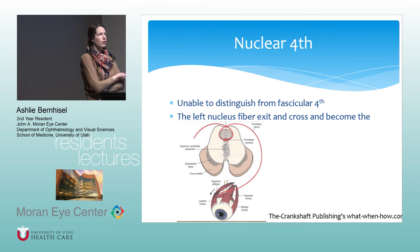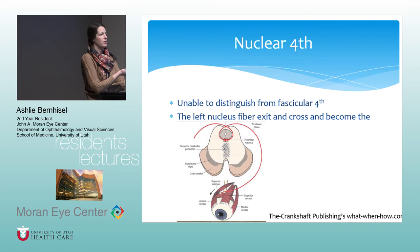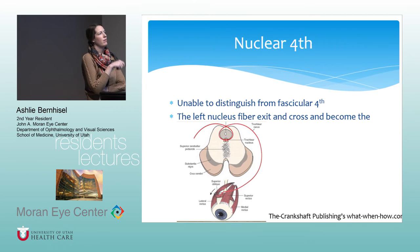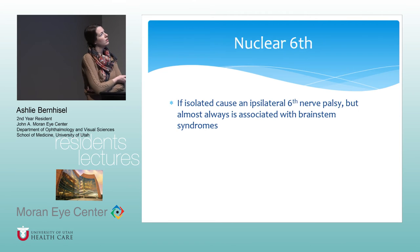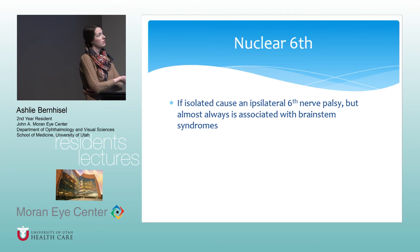Nuclear fourth and sixth palsies are exceedingly rare and basically associated with fascicular syndromes, which will be discussed separately. One key thing to know about nuclear fourth is that the fibers cross — so a right nuclear fourth causes a left fourth palsy.